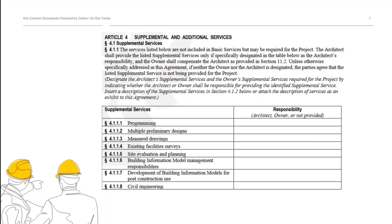This is from AIA Document B-101, 2017, which is one of our Standard Owner-Architect Agreements. Again, this is just one example, but many other documents contain similar language. As you can see, this article lists supplemental services which may or may not be included in the architect's services. These services are not included in the architect's basic services, but the parties can choose to include them. The architect only performs the services if they are specifically indicated within this table. If the parties do not indicate a service, it is not part of the project.